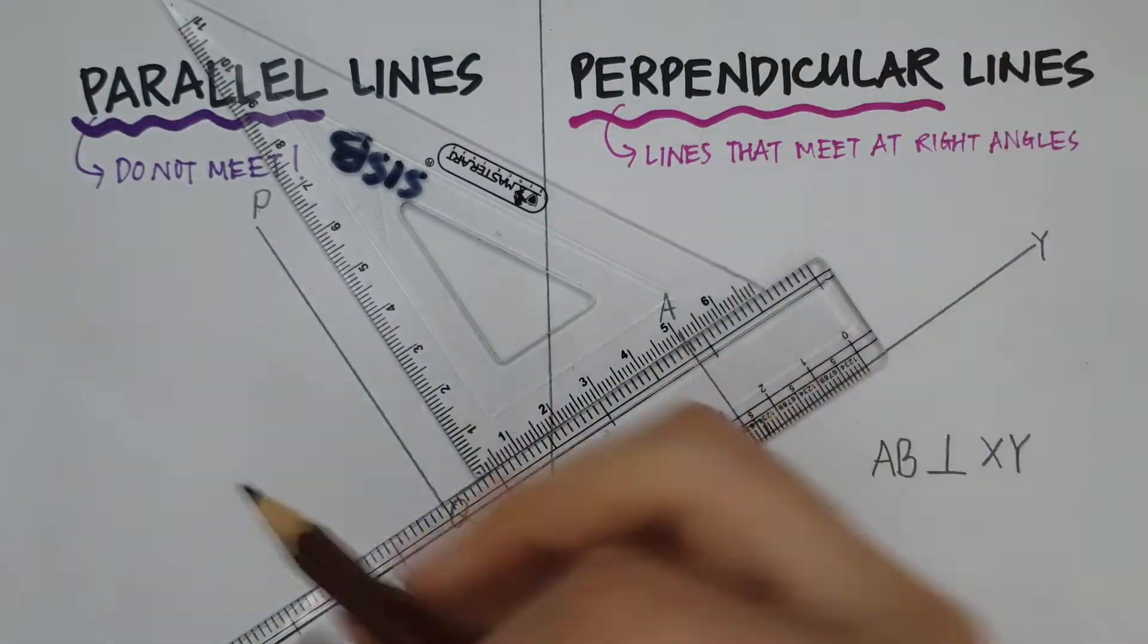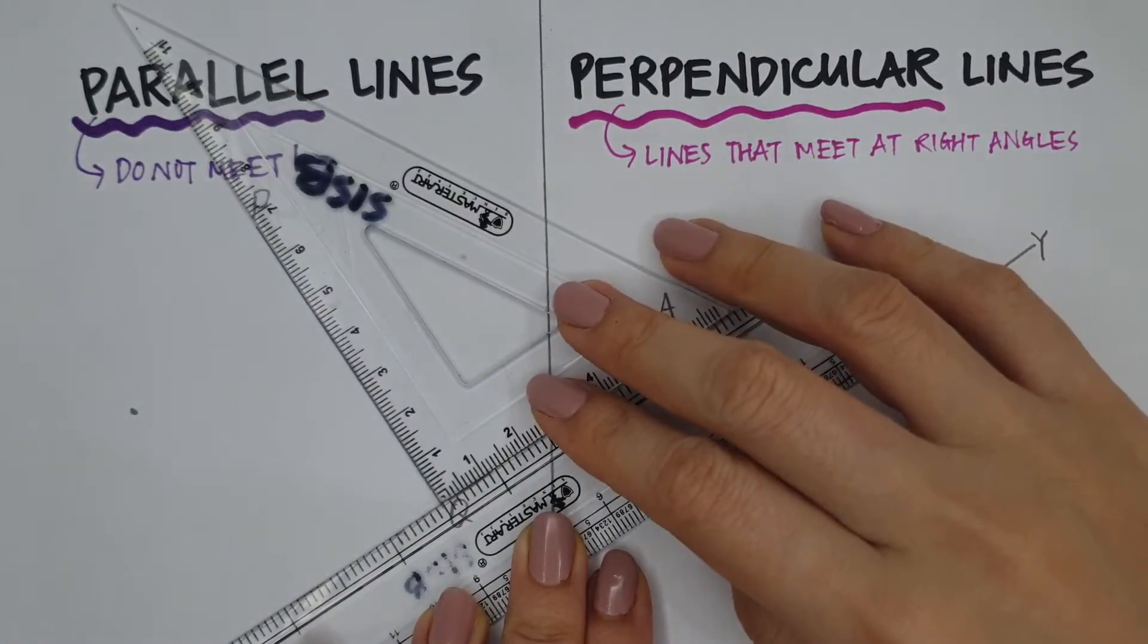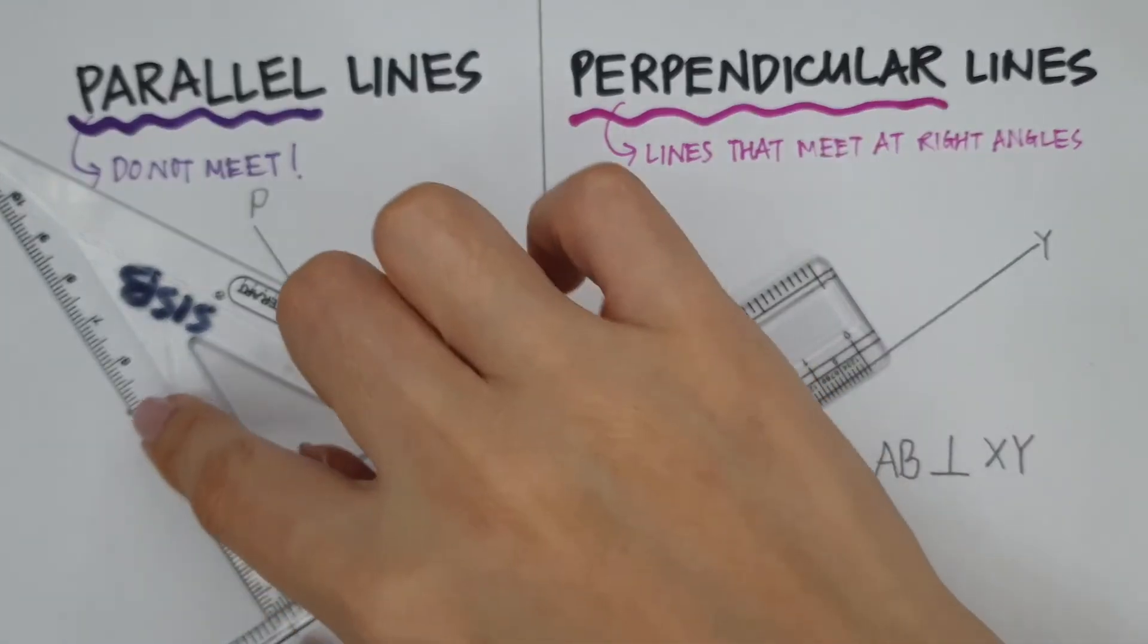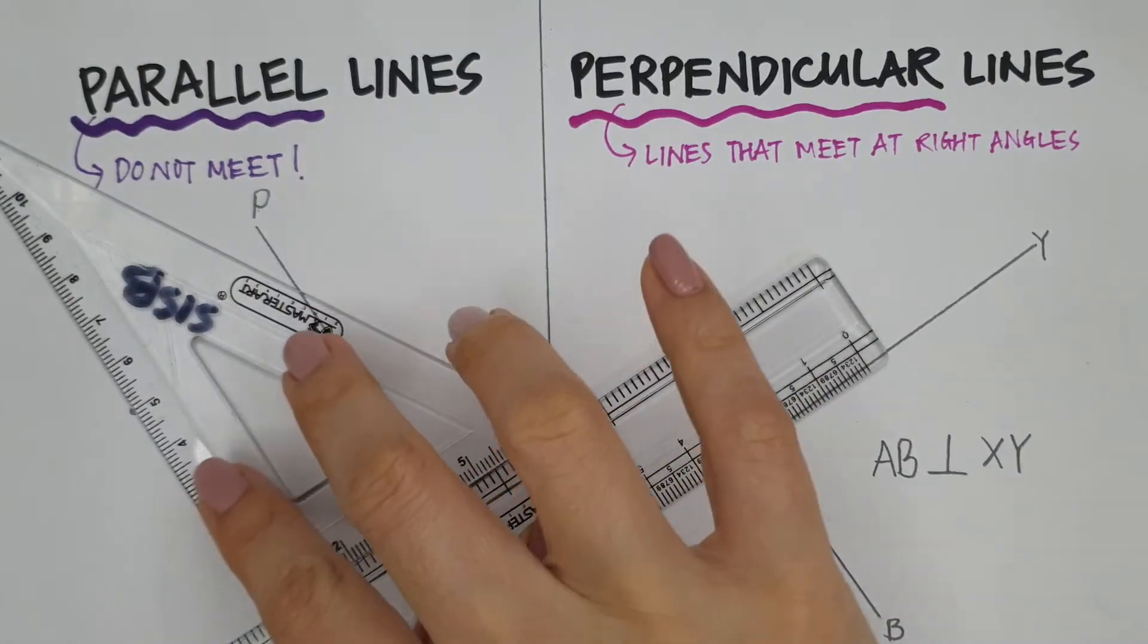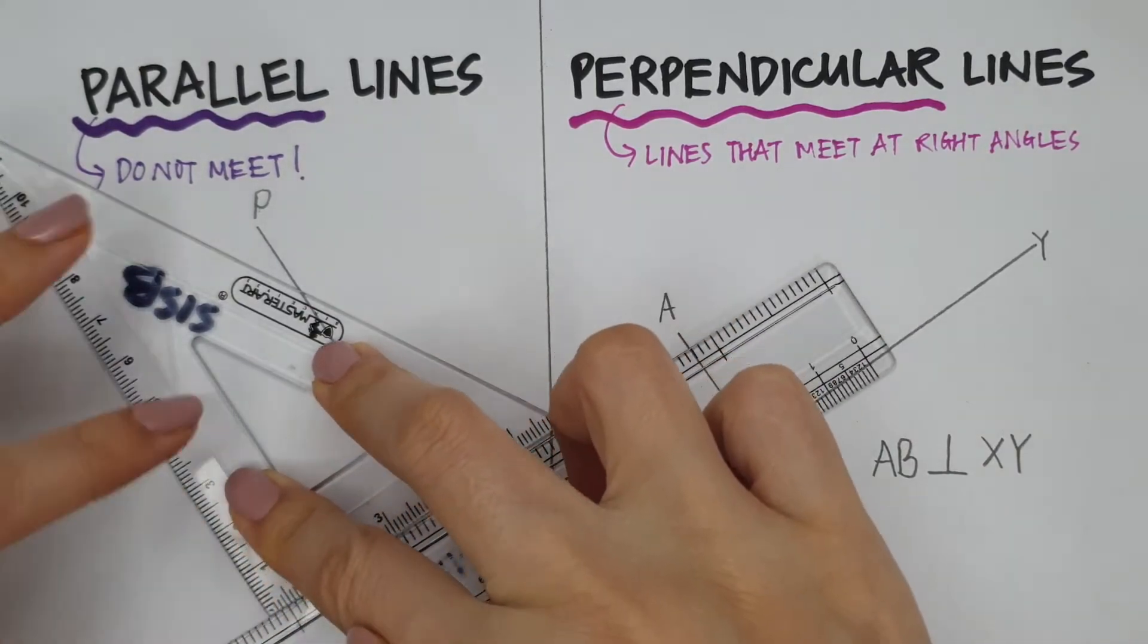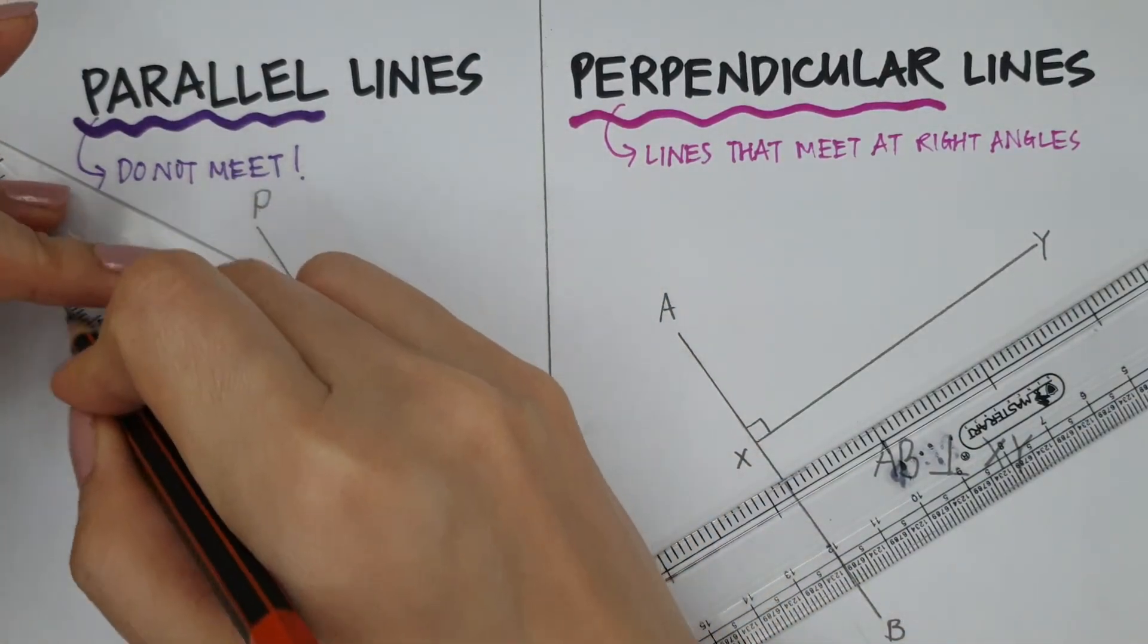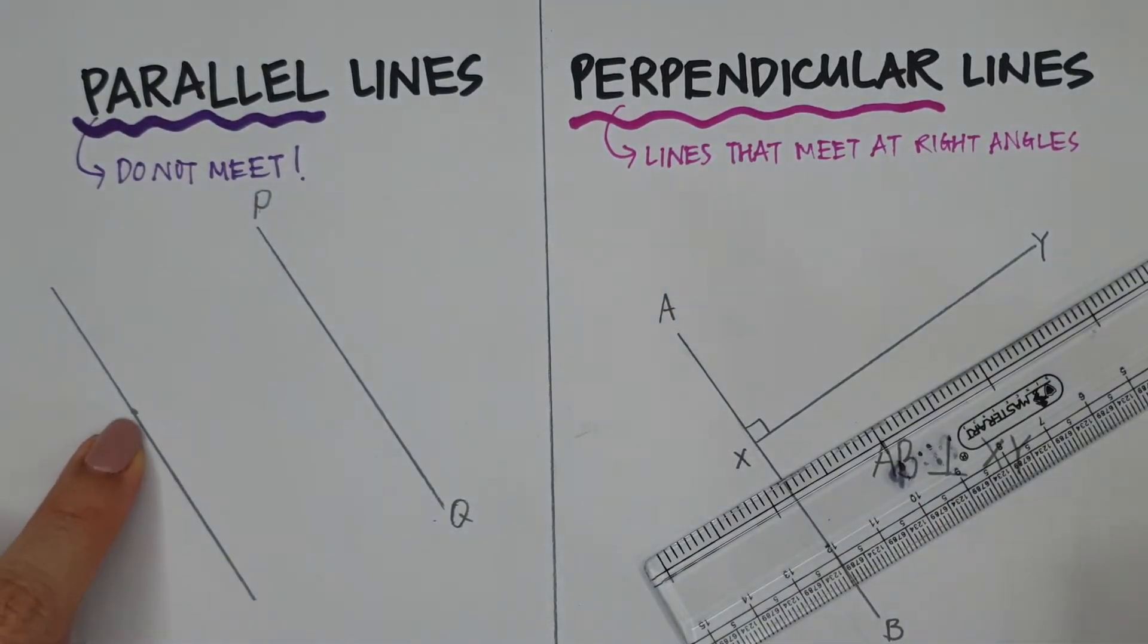And then I should be able to slide and every line that I slide to would be parallel. If I want my parallel line to pass through this point, for example, can you see this point? Then I'm going to slide all the way down such that it passes through that point. So, once I have it there, I'm going to hold my set square down, hold it down tight, remove my slider, and then draw the parallel line that passes through that point.